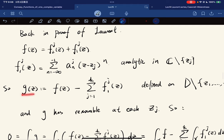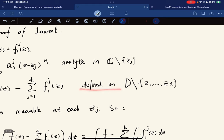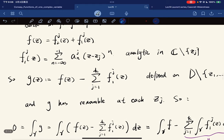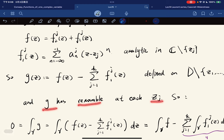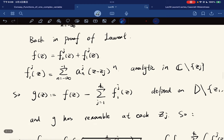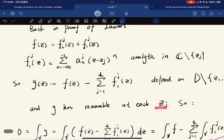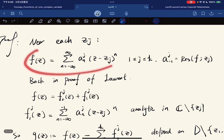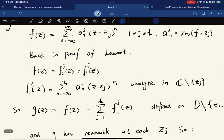So if we define gz equals fz minus the sum of all f1j, which is defined, of course, on the same domain. And g has a removable at each zj. Why? Because near each zj, fz is equal to this, and f1z is equal to this.